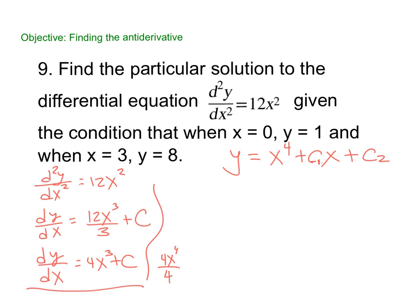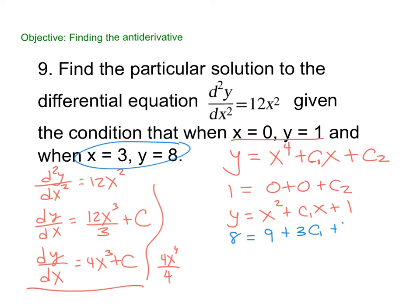All right, so now I'm going to plug in to find my c1 and c2. So I have x, 0, and 1. So y is 1 equals 0 plus 0 plus c2. So c2 is 1. So now we have x squared plus c1 plus 1. Now I'm going to plug in my 8 and my 3. 8 equals, let's see, 9 plus 3c1 plus 1. So c1 looks like is, let's see, that's 10, negative 2/3. I subtracted the 9 and the 1. That gives me negative 2 divided by 3. So my final answer is x to the 4th minus 2/3 x plus 1.